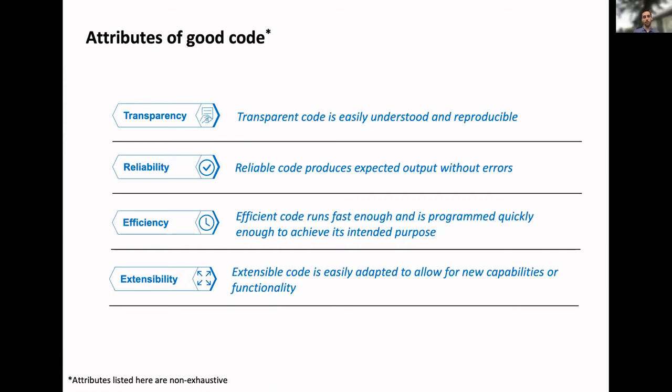Here are four attributes of good code, certainly not exhaustive, also tailored toward the decision modeling framework. One is transparency: can we write code that's easily understood and reproducible? Second is reliability, producing the output we're hoping for with as few bugs as possible. Then there's efficiency: can we program the model in a reasonably fast way given our intended purpose, and can it actually run fast enough? And then extensibility: can we adapt our model to a new disease area or add new treatments easily?